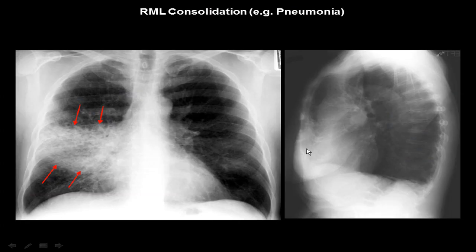We are going to talk about the pathologies now. What can we see about this case? It's a posterior-anterior and lateral plain X-ray showing right middle lobe consolidation. This is a soft tissue density present at the right middle lobe, meaning mostly pneumonia — presence of an infectious condition and pneumonia.